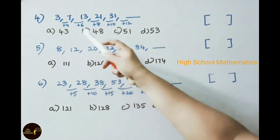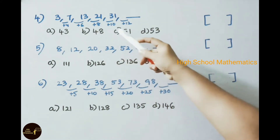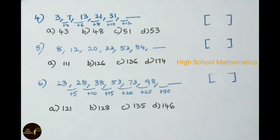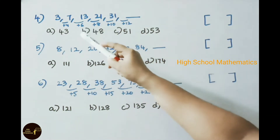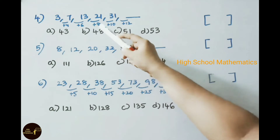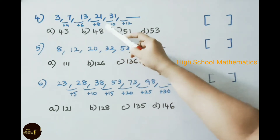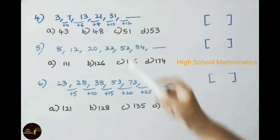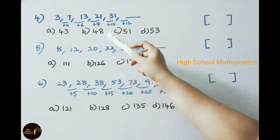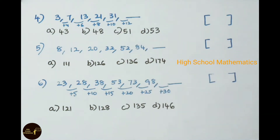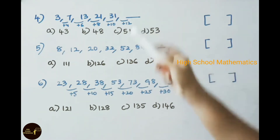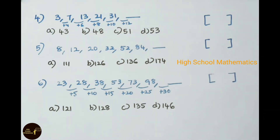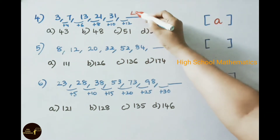Fourth practice problem: 3, 7, 13, 21, 31 — find the next term. Observe: 3 plus 4 is 7, 7 plus 6 is 13, 13 plus 8 is 21, 21 plus 10 is 31. The differences are 4, 6, 8, 10 — increasing by 2 each time. So the next difference is 12, giving 31 plus 12 equals 43. The answer is option A, 43.